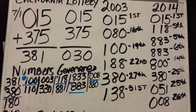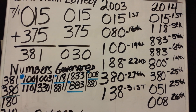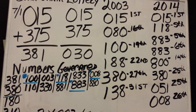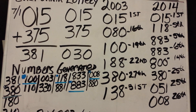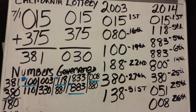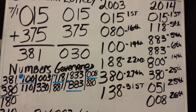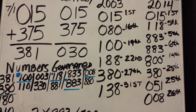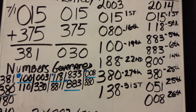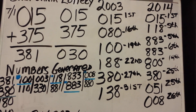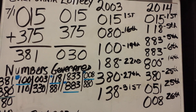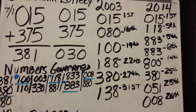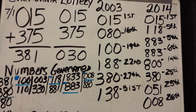In 2003, you can see that 015 fell on the first day of the month, followed by 011, 801, 88, 380, and 381 — all numbers generated from 015. In 2014, 015 fell on the first day of the month, followed by 118 on the fifth, 883 on the fifth, and 883 again on the sixth.